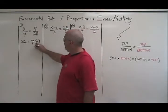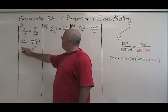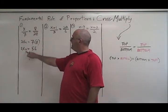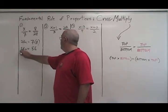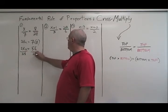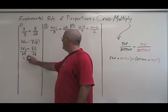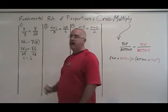7 times 8 is 56. So we have 28x equals 56. Now, since our x is being multiplied by 28, we divide both sides of the equation by 28. These cancel and we have x isolated. And 56 divided by 28 is equal to 2. We have our answer.